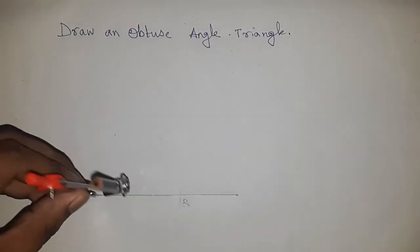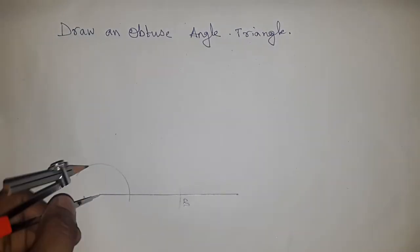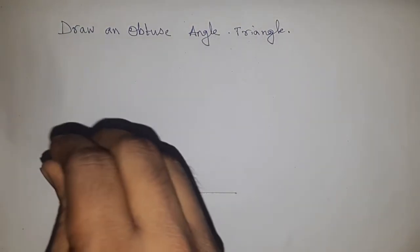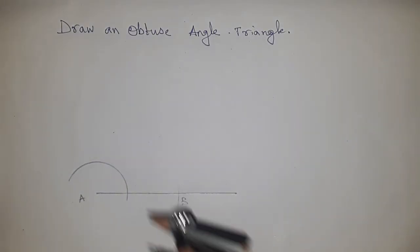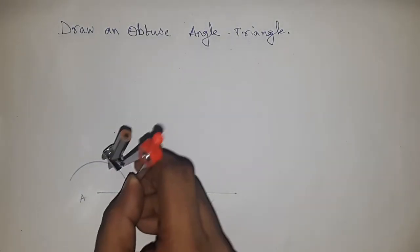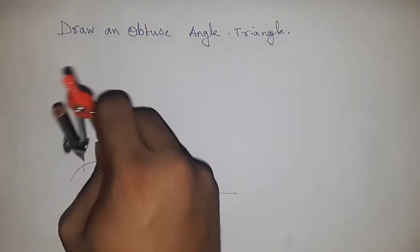Now I'm going to construct an obtuse angle, 120 degrees, because 120 degrees is greater than 90 degrees. I am going to construct this 120 degree angle at point A.